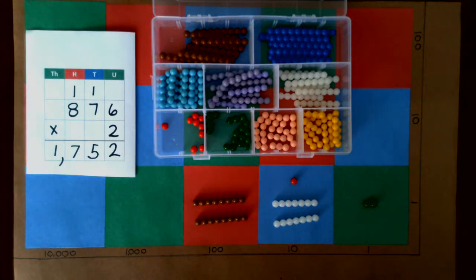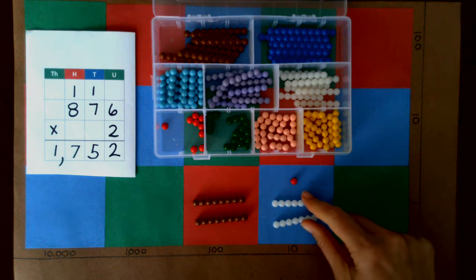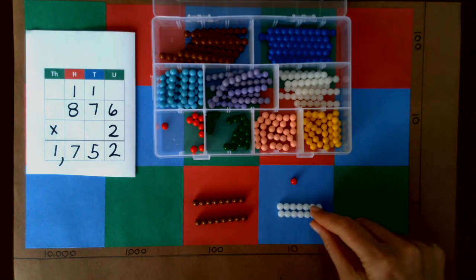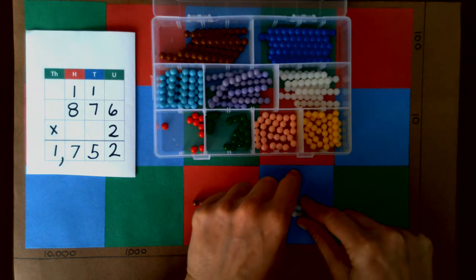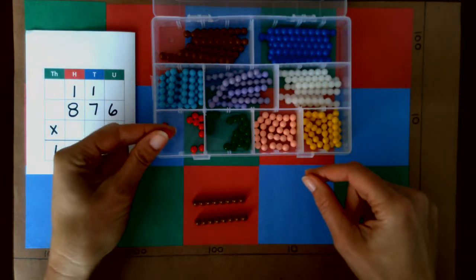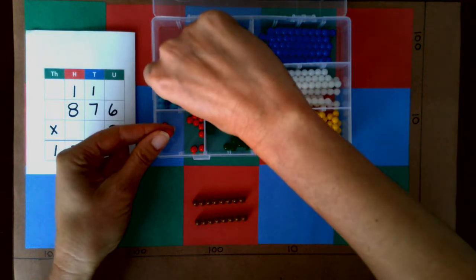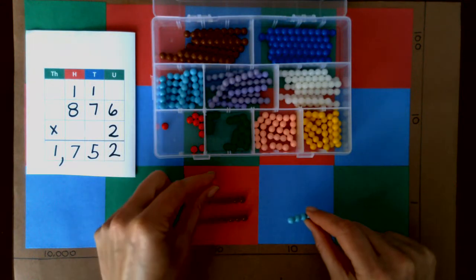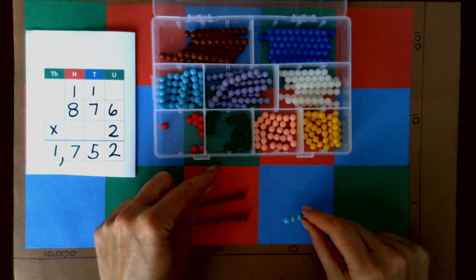Next we have our two sevens, so seven and seven is 14 plus one is 15. We're going to make that exchange, I have one and I need a five.